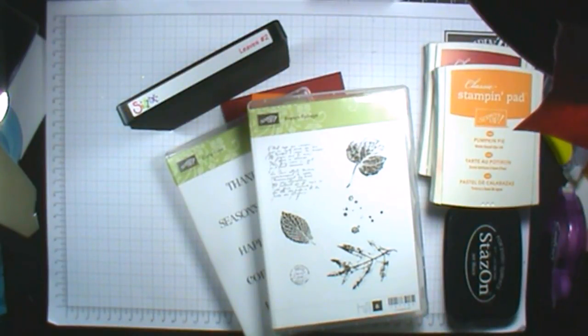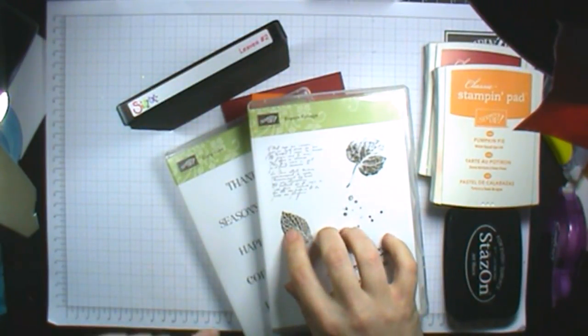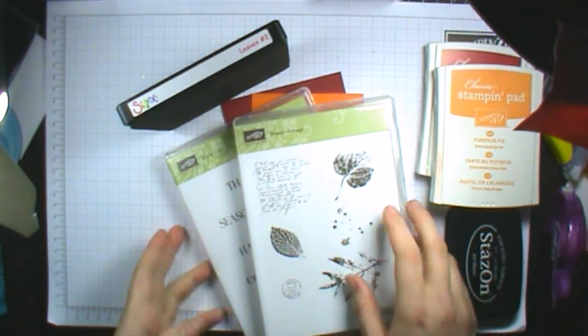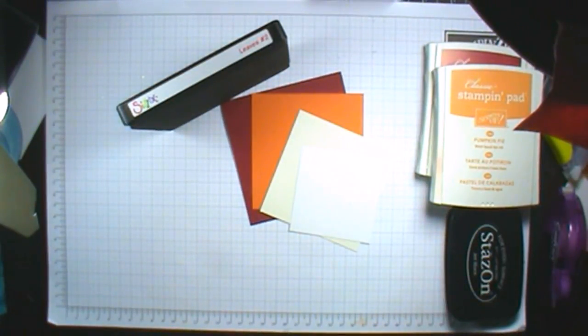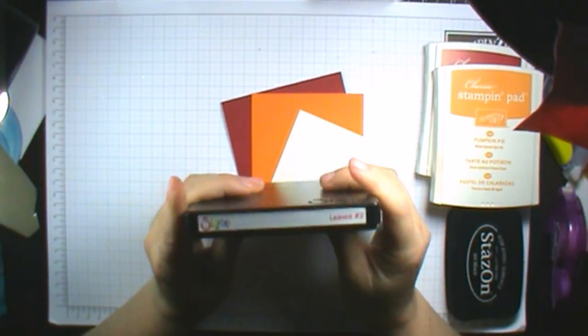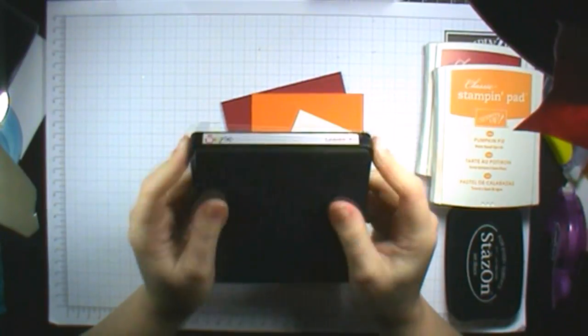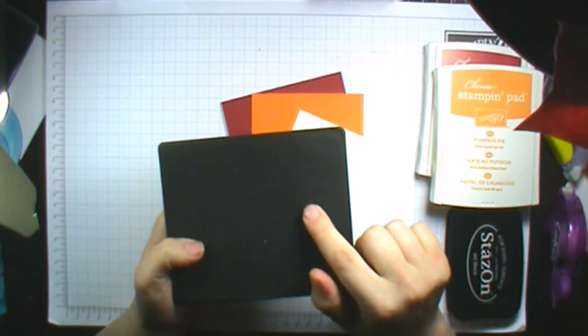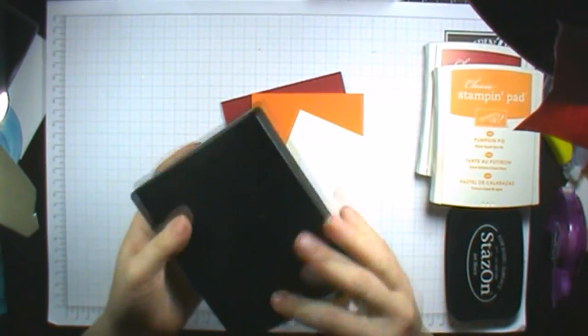Hi Stampers, today we'll be making a card using the French Foliage and Curly Cute stamp sets from Stampin' Up. We'll also be using the Sizzix Bigs Leaves No. 2 die from Stampin' Up and we'll be using the Maple Leaf shape.